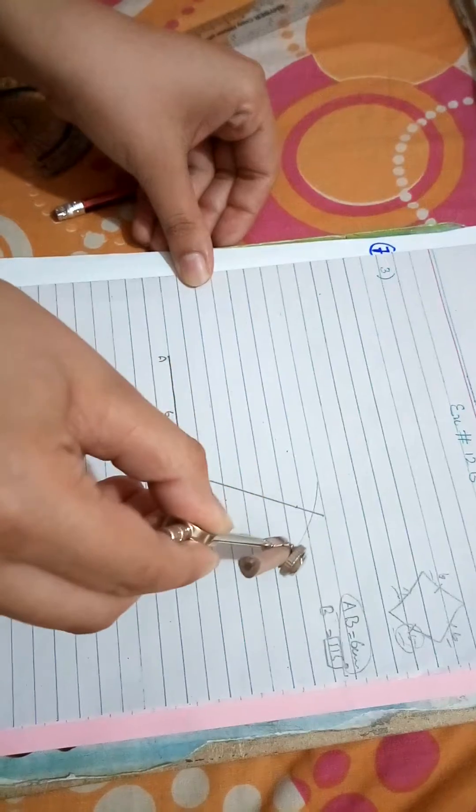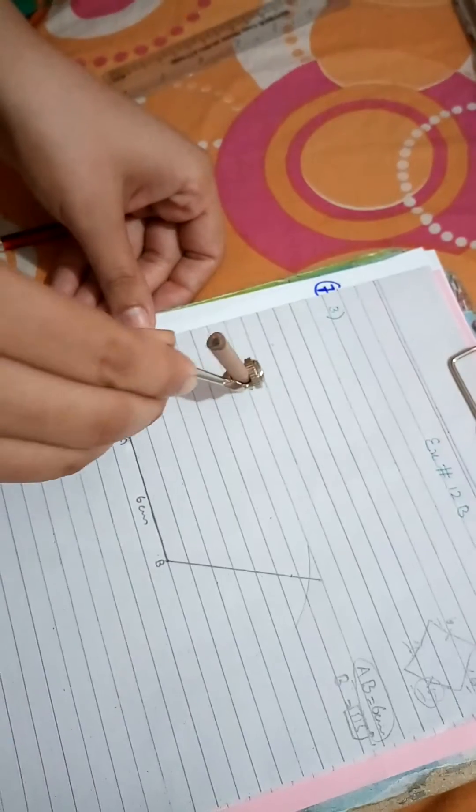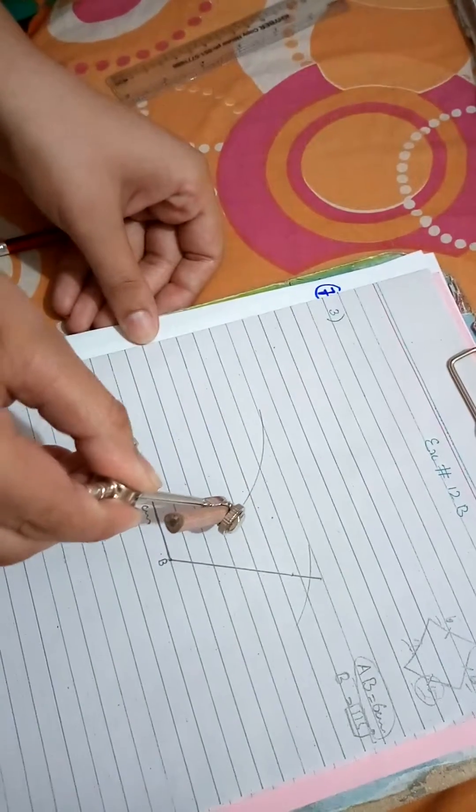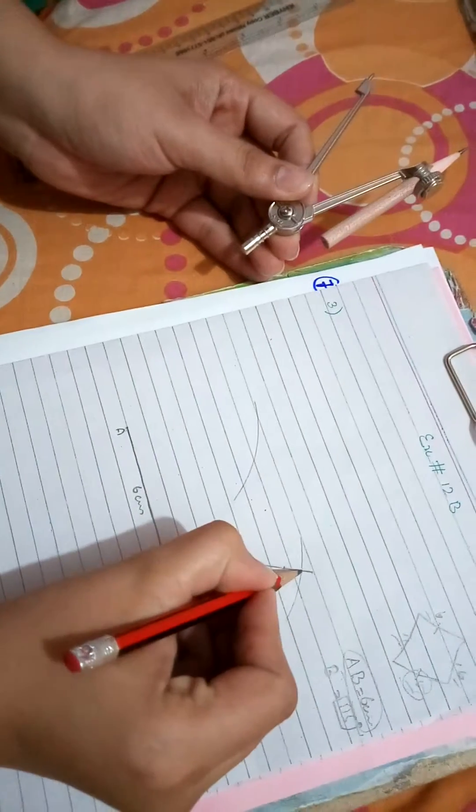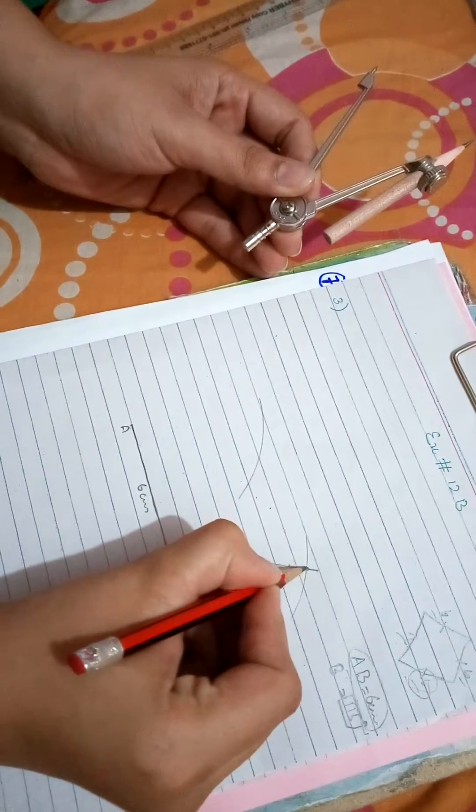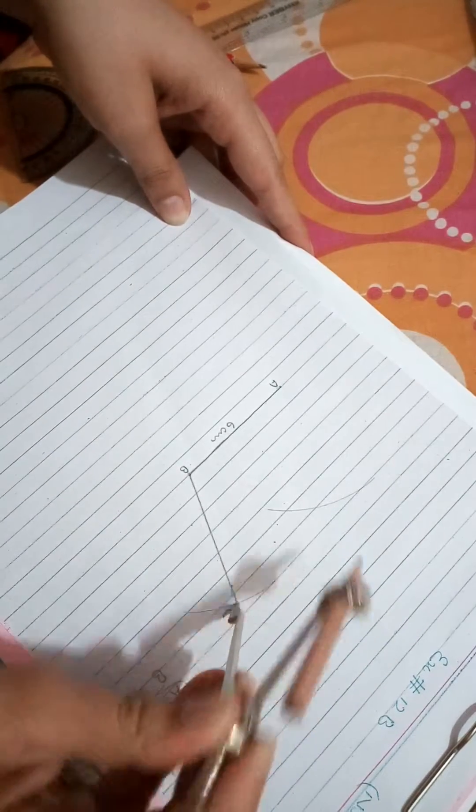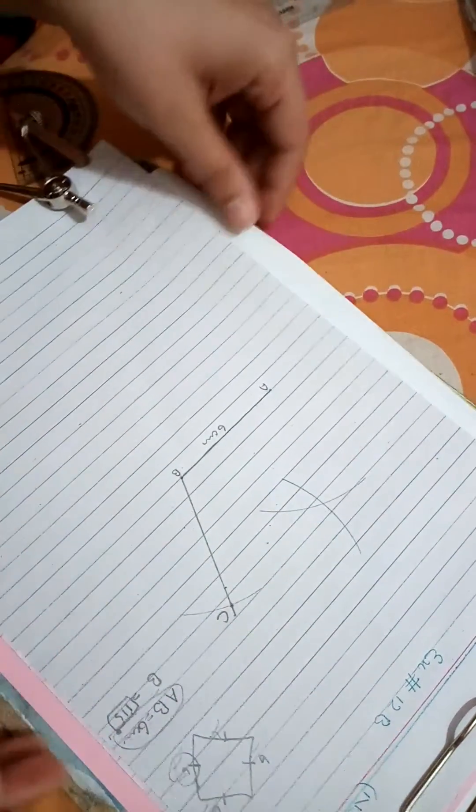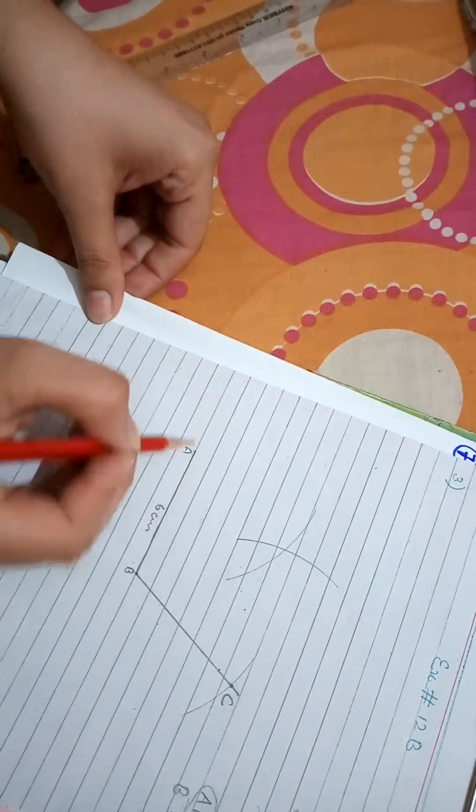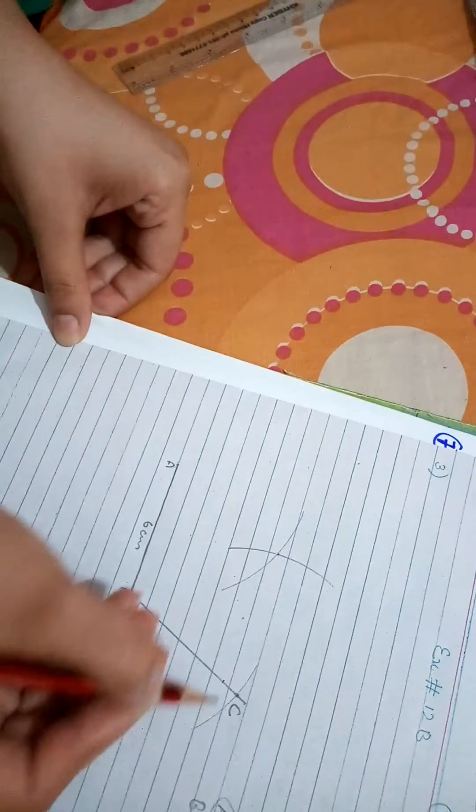Mark an arc. All four sides have the same length so we can mark all the lengths. The point where B and the arc intersect each other, give its name as C. And taking C as center, mark another arc such that it intersects the arc that we have taken from point A.